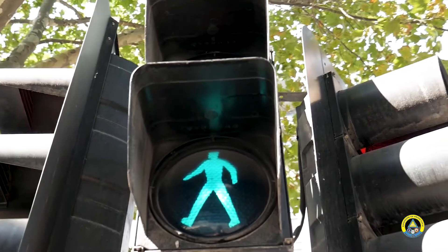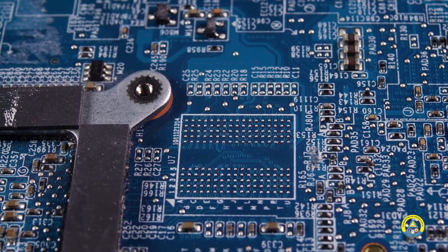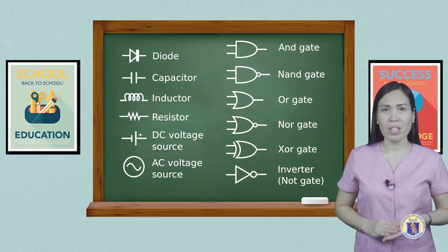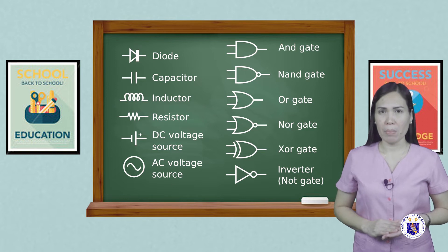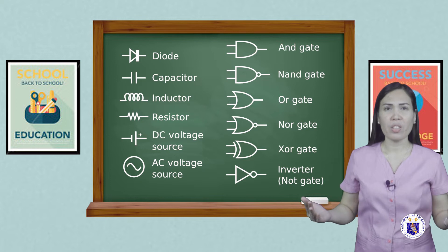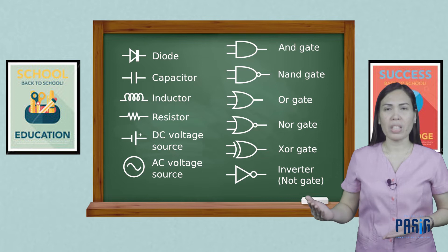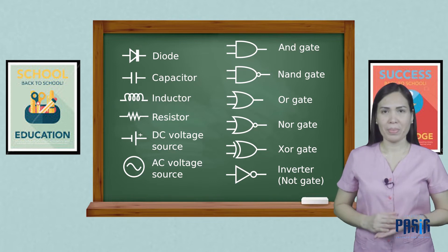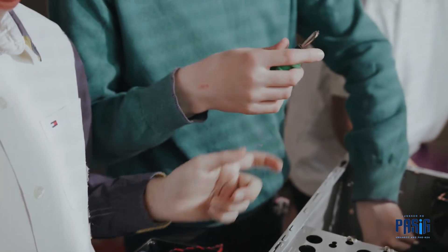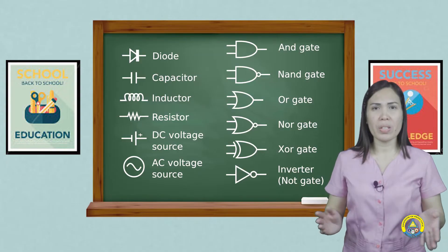Are you familiar with the different traffic symbols? In computer system servicing, we also use different electrical and electronic symbols. It is very important to use different kinds of electrical and electronic symbols for the engineer and technician to easily understand the different design of the diagram, and to simplify each component in a diagram. Computer system servicing gives you skill in familiarization about electronics and electrical symbols that you can use in daily life.